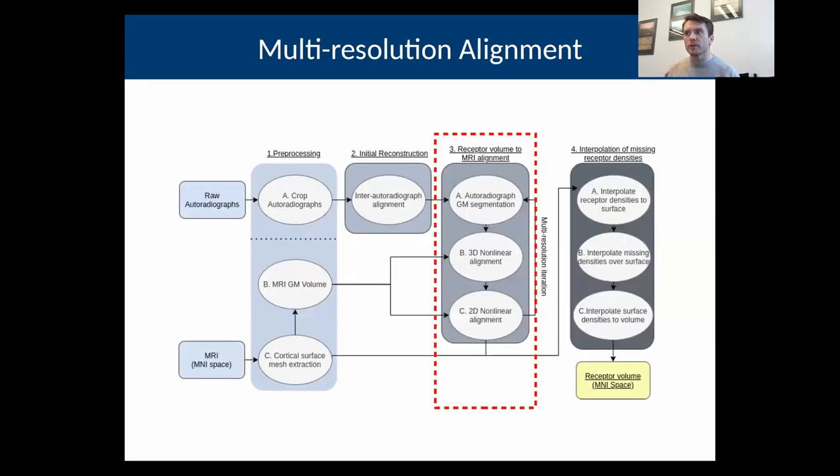To overcome this problem, I took a different multi-resolution approach. The idea here is that we start at a particular resolution, four millimeters for example. We do the segmentation of the autoradiographs, then do the 3D nonlinear alignment to the MRI, and then 2D nonlinear alignment. We take all the sections and warp them in 2D so that they fit better to the MRI. Then we begin the whole process again at three millimeters, two millimeters, et cetera.